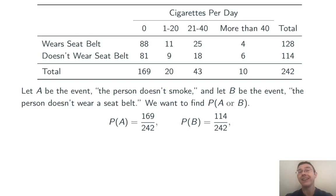The probability that they don't wear a seat belt is 114 out of 242. We also are going to need the probability of A intersect B, the probability that the randomly selected individual both doesn't smoke and doesn't wear a seat belt. In this case, just consulting that table, I see there are 81 such individuals. So the probability of A and B is 81 out of 242.